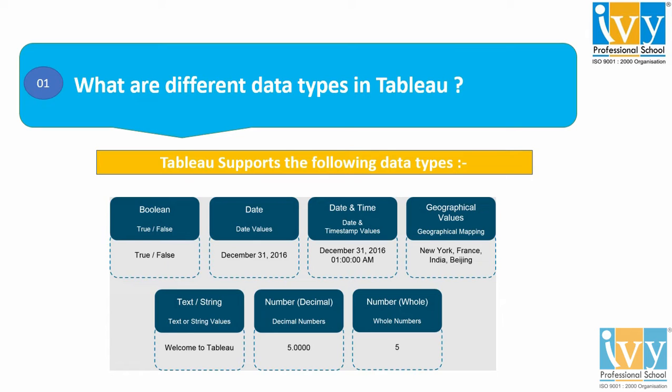Next is your Text or String data type — data types that contain one or more characters. For example, 'Welcome to Tableau' or 'I love Tableau' — these are examples of the Text or String data type.